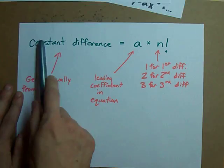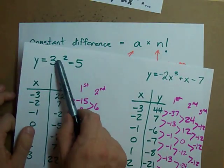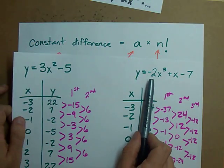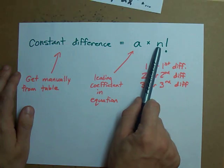The constant difference you get in any of these is going to be your leading coefficient, that's the number attached to the x with the highest exponent on it, times the degree of the equation factorial.